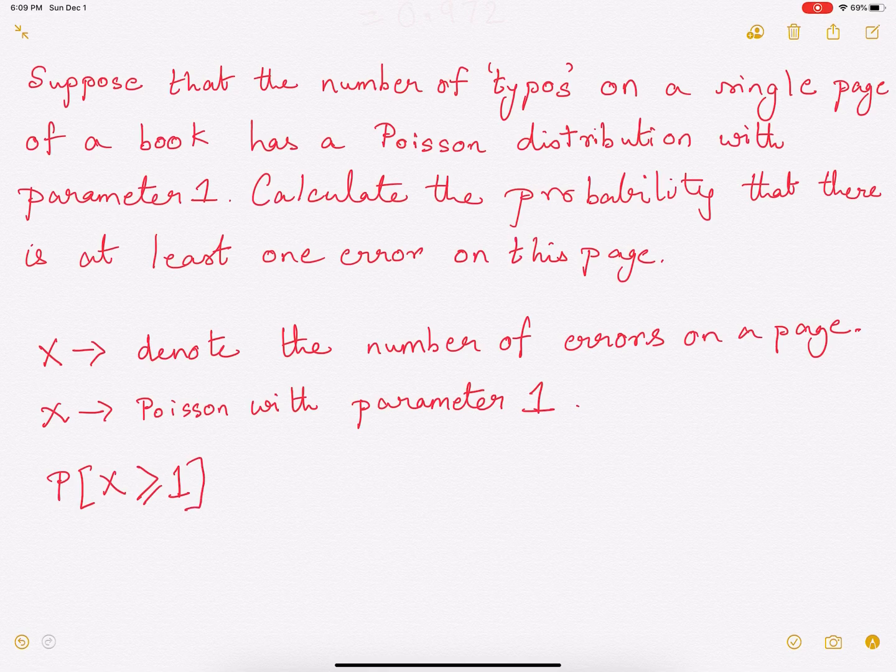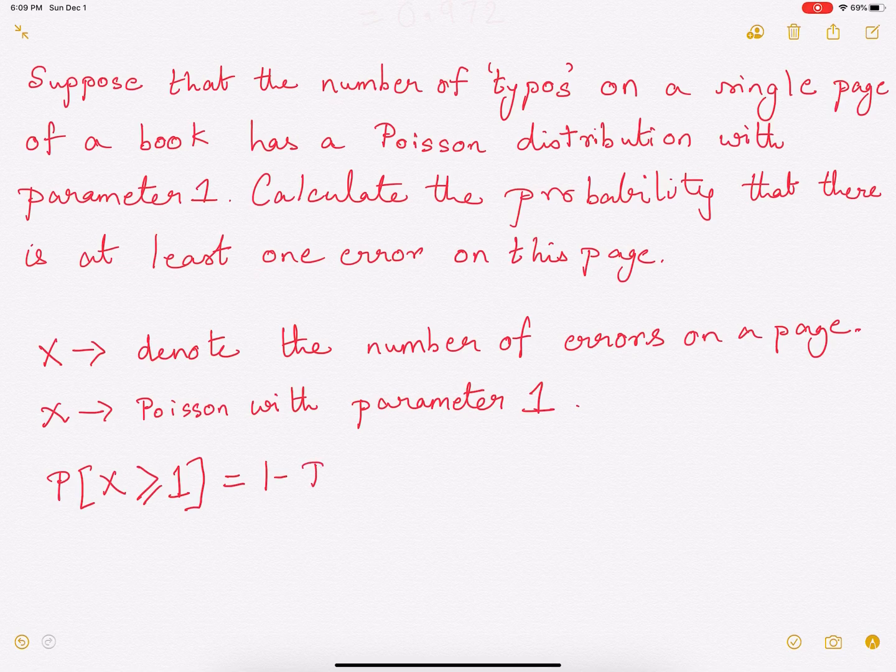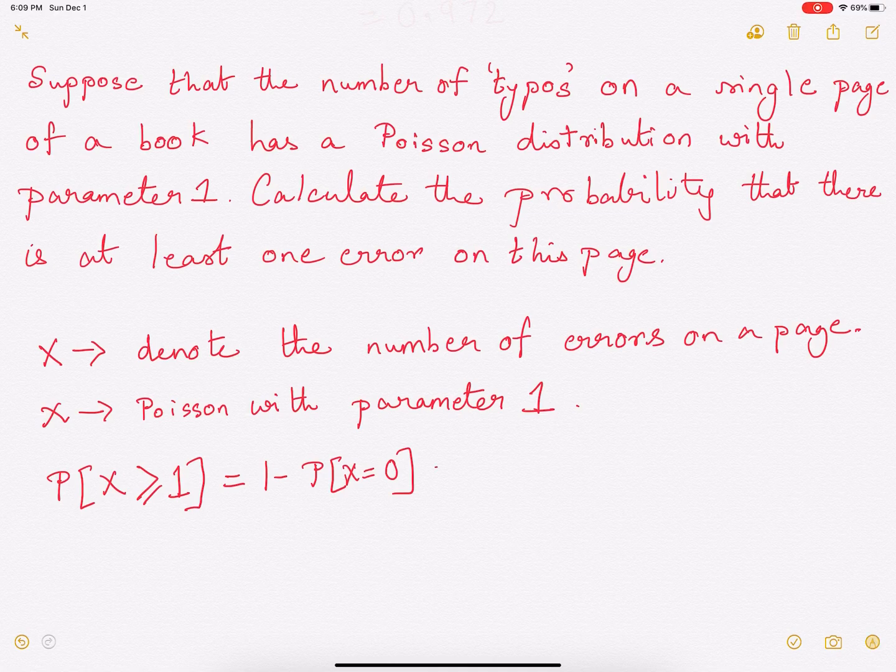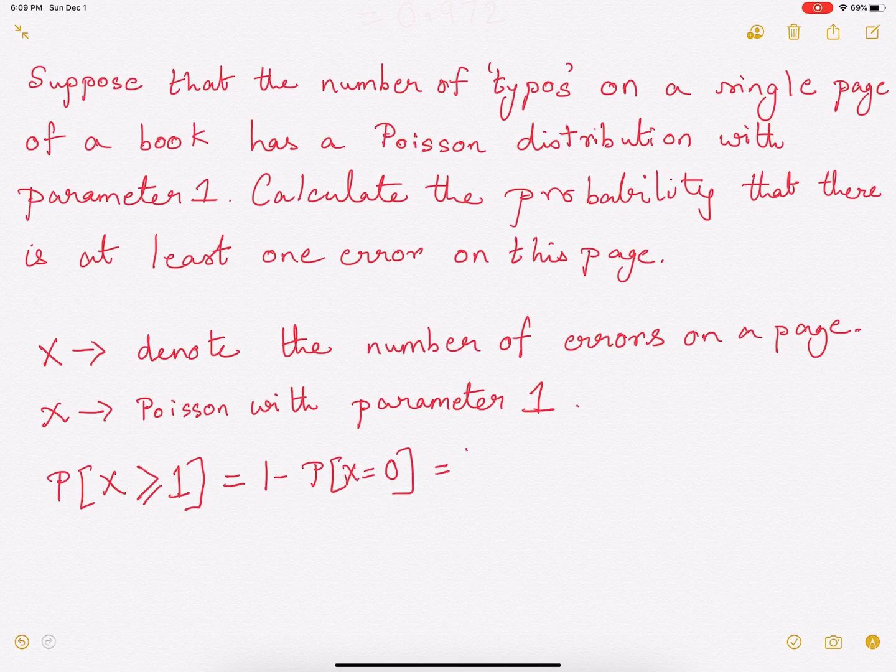Now to find this out, an easy way to do this is 1 minus probability of X equals zero. Probability of X equals zero is easy to find out using a Poisson distribution and that is e to the power of minus 1.